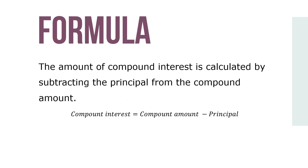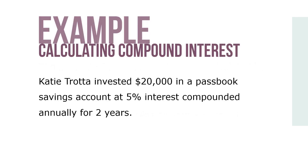The amount of compound interest is calculated by subtracting the principal from the compound amount. So compound interest equals compound amount minus principal. Here's an example.